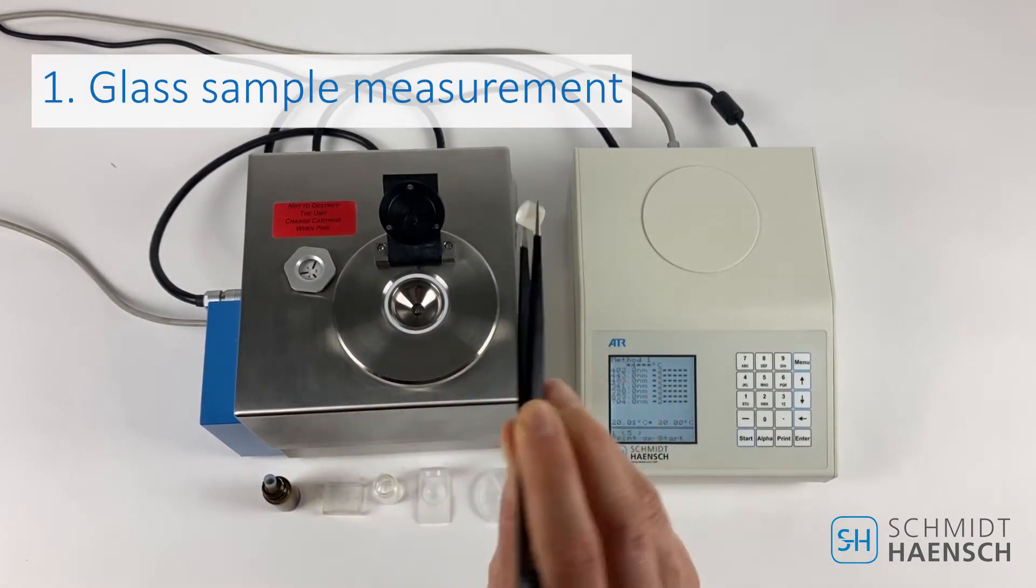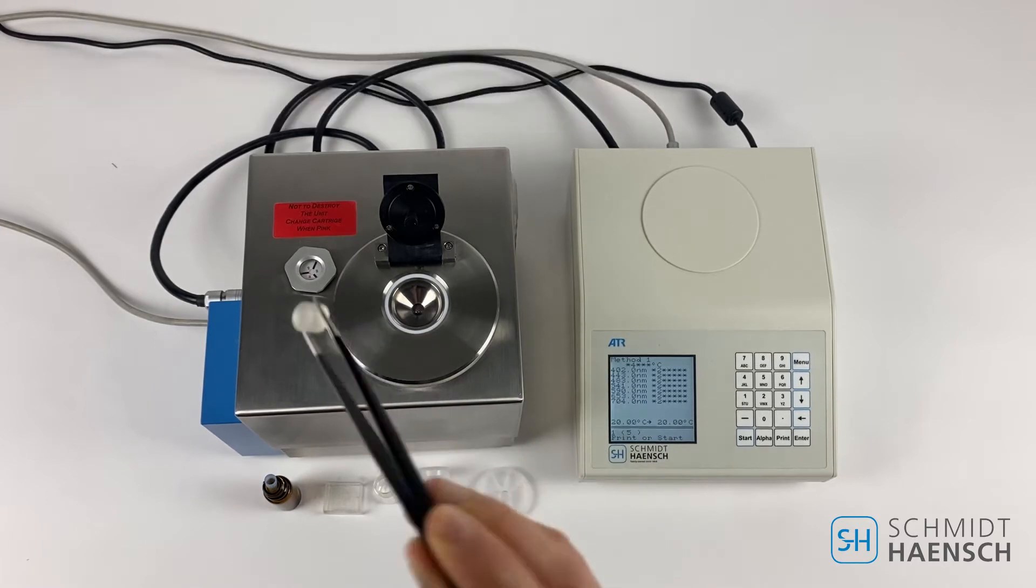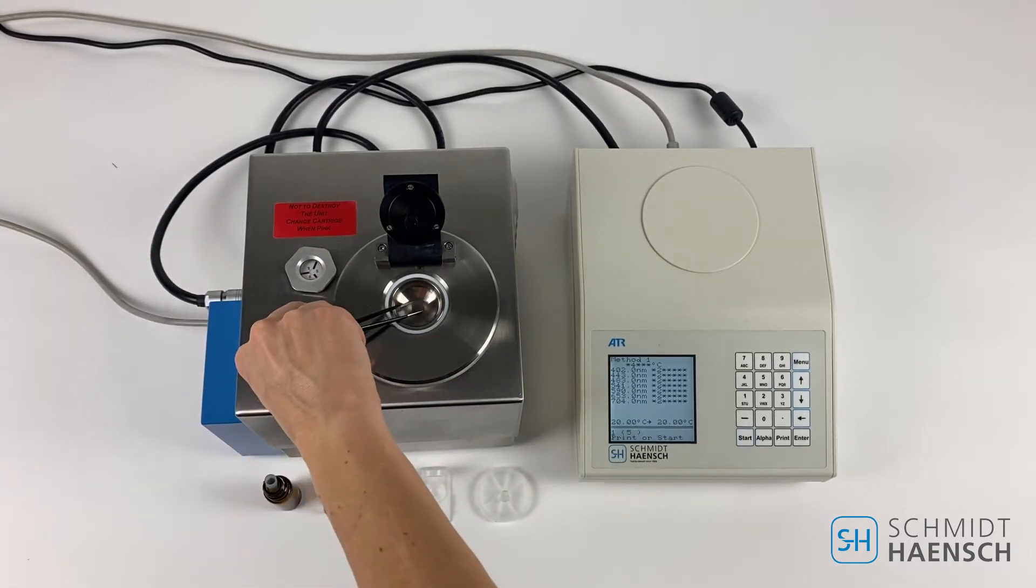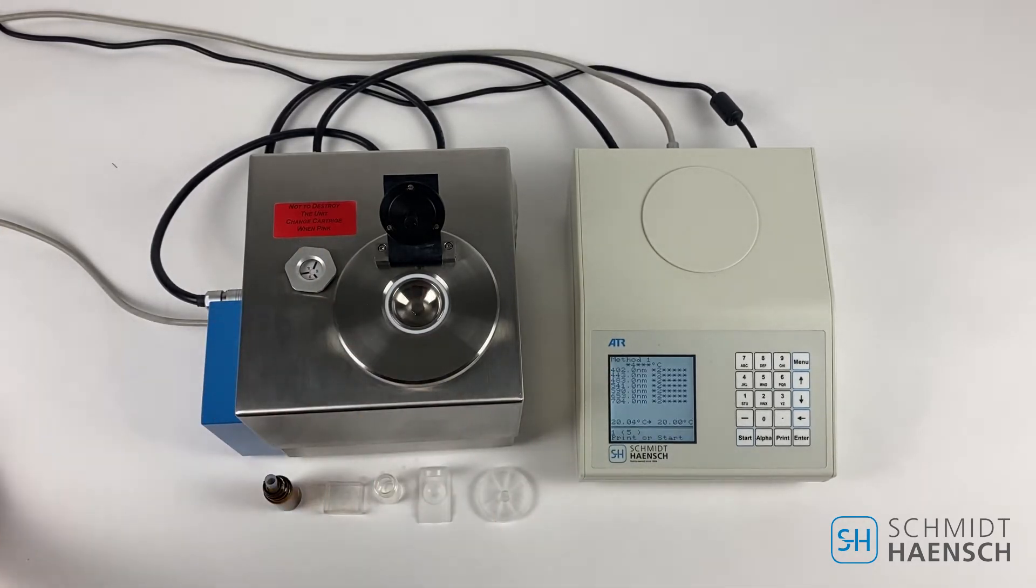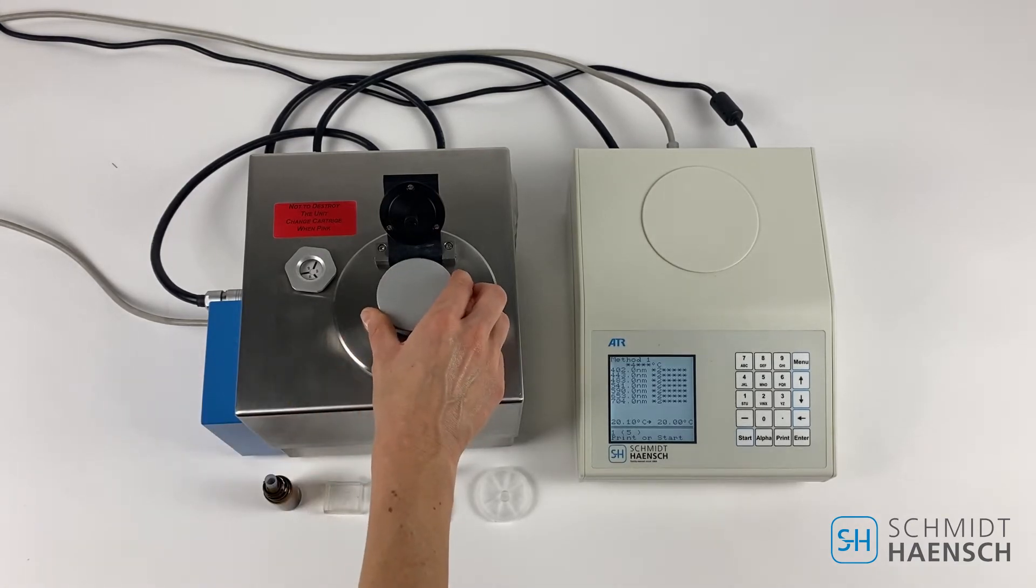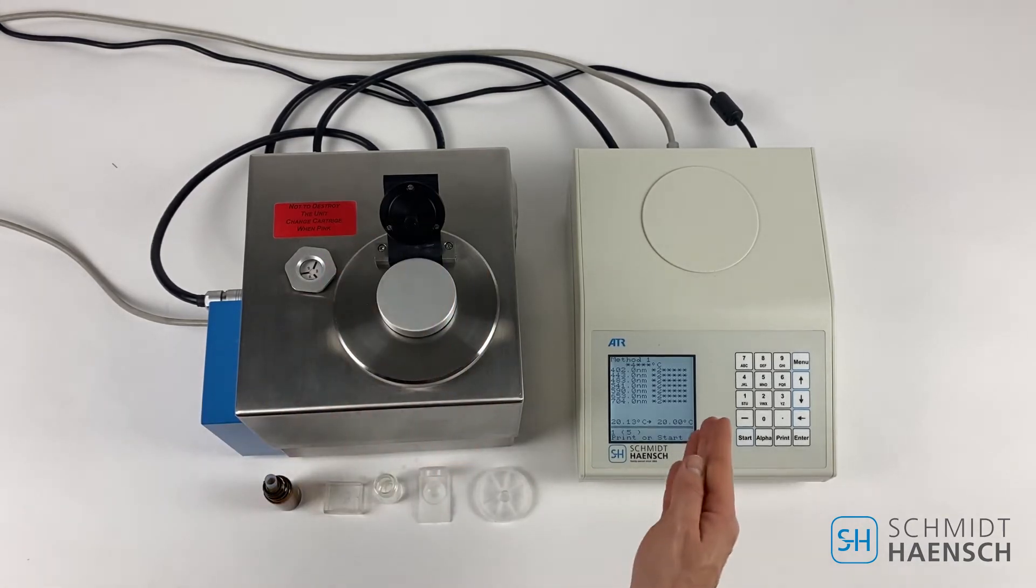We will use a solid glass sample which is polished on one side. This will be put onto the prism surface of the instrument. Close the lid, press the start button.